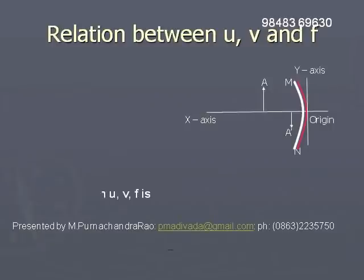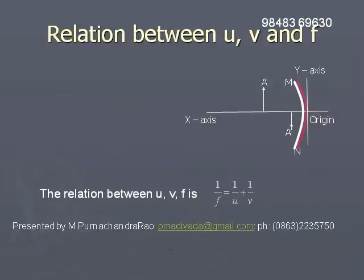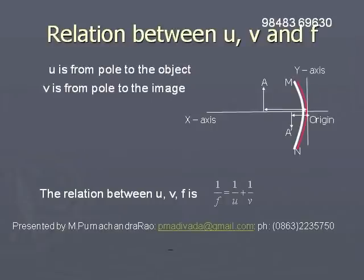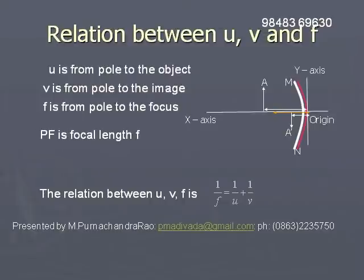The formula applicable to a mirror gives the relation between U, V, and F as: 1/V + 1/U = 1/F. Here, U is the object distance — that is, the distance from the pole of the mirror to the position of the object along the principal axis. V is the image distance, the distance of the image from the pole. F is the focal length, the distance from the pole P to the focus F.